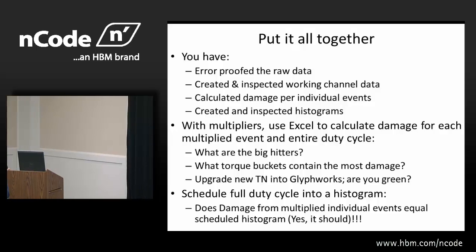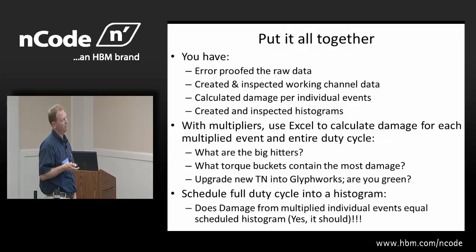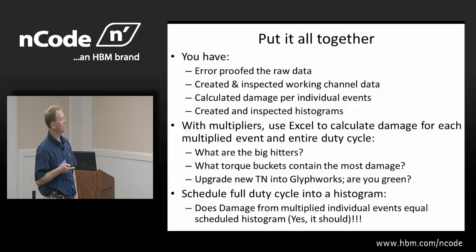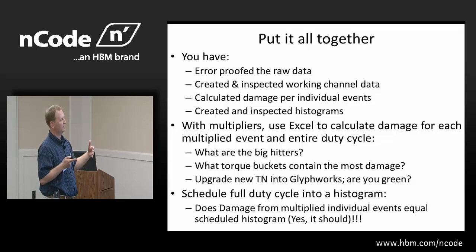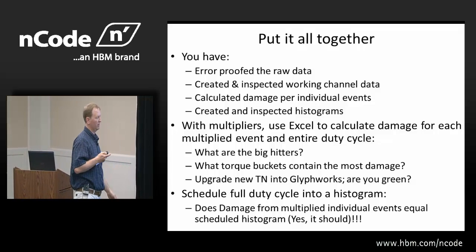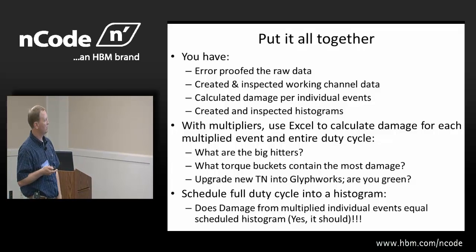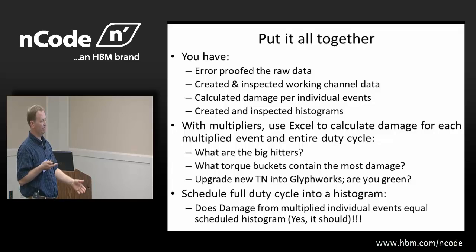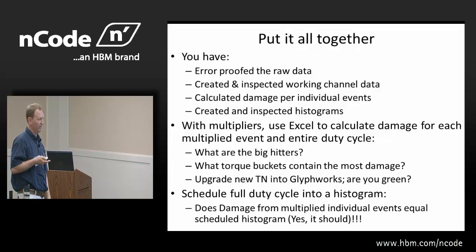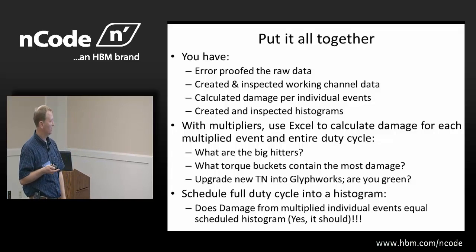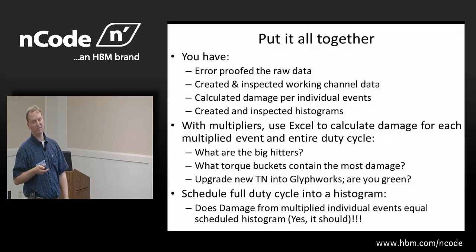Putting it all together: I've error-proofed the raw data, created and inspected my working channels — drive shaft speed and drive shaft torque — and calculated the damage per individual event. I've created and inspected my histograms. With the multipliers in Excel, you can calculate the gear damage on each event and figure out what are your big hitters — what's killing the component, what torque buckets contain the most gear damage. You can also put in a new TN curve into Glyphworks to see if a larger axle or a gear upgrade could get you green. Then you can schedule a full duty cycle histogram for the gear engineer, and you already know how much damage is in that histogram and what events are causing all the problems.